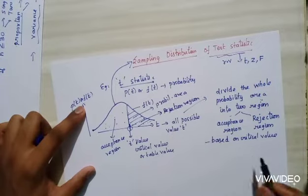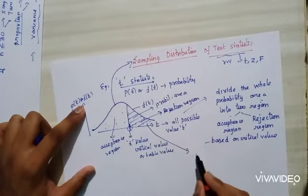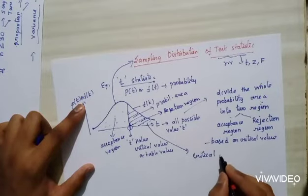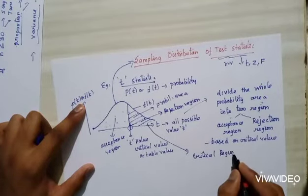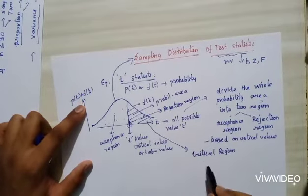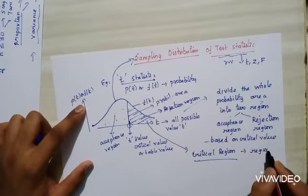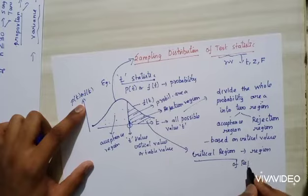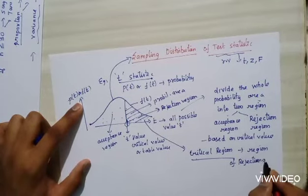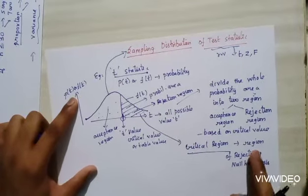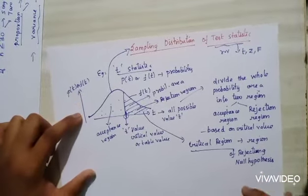This rejection region is called the critical region. The critical region is the region of rejecting the null hypothesis.